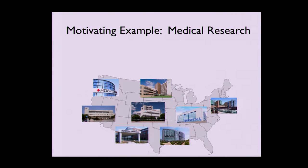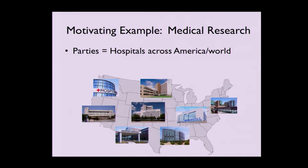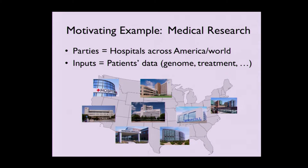To give a motivating example, suppose we could take all the hospitals across the country or the world and compute some global statistical data or information about patients' genomic information or treatment histories. This sort of thing has large potential for benefit, and it's something you can't do without some sort of layer of security — you can't just publish these kinds of information.